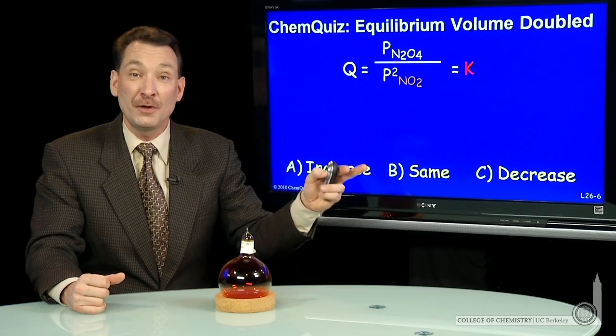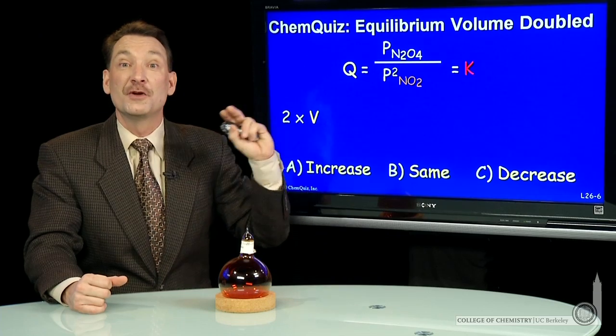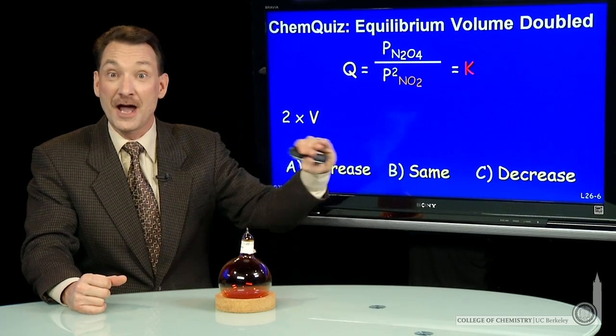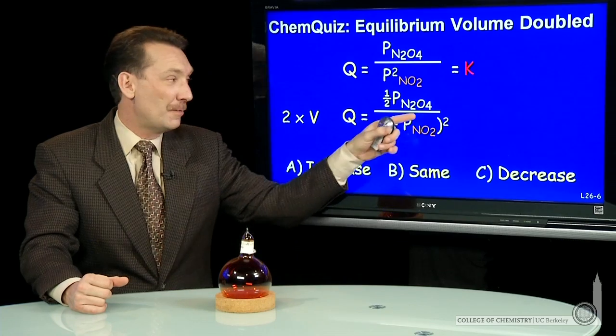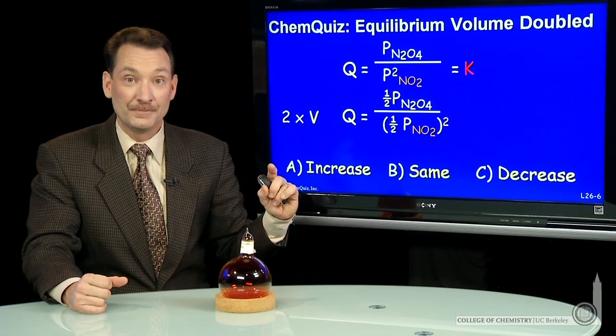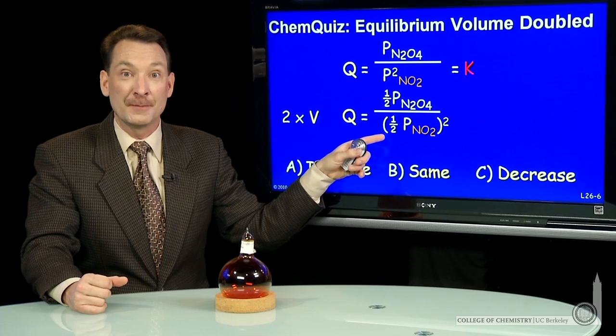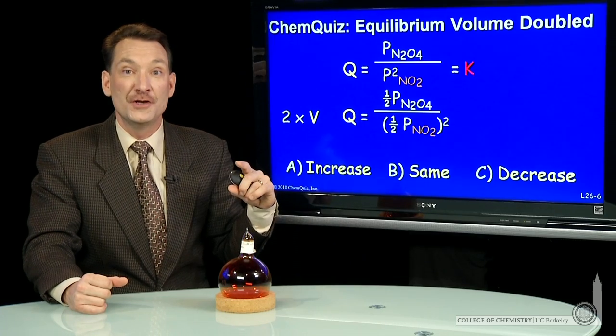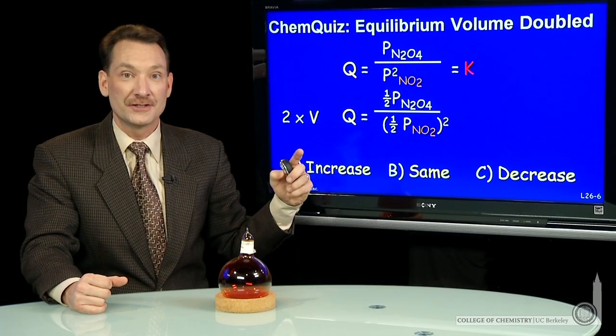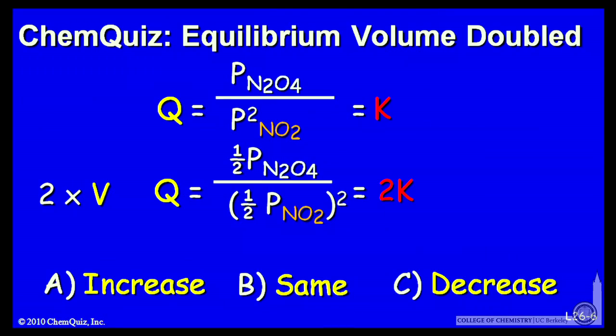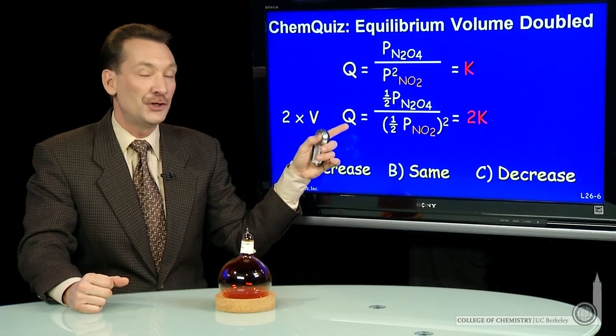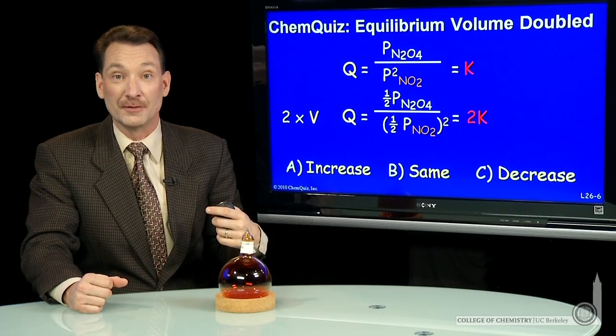So if I double the volume for this, what that will do is reduce the pressures instantaneously by a factor of 2. So I'll have 1 half the equilibrium pressure and 1 half the equilibrium pressure. But in the denominator, that 1 half is squared, so I'll have a factor of 1 over 4 in the denominator and a factor of 1 over 2 in the numerator times those equilibrium pressures. So that 1 over 4 in the denominator gives me a factor of 2. I'll have twice the value of K for this new Q. So Q will be larger than K. It'll be 2 times bigger than the equilibrium constant.